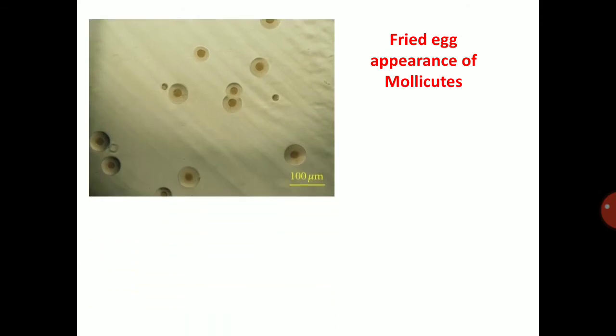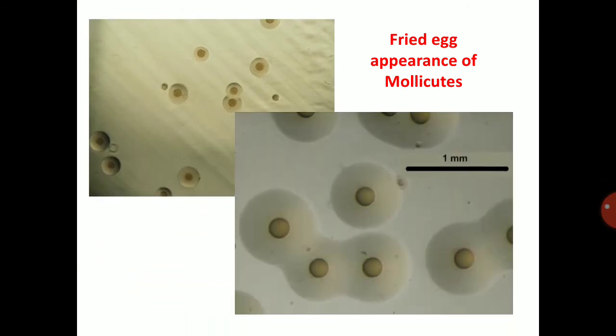The fried-egg appearance of mollicutes shows a fried-egg structure with a central nipple-like structure.